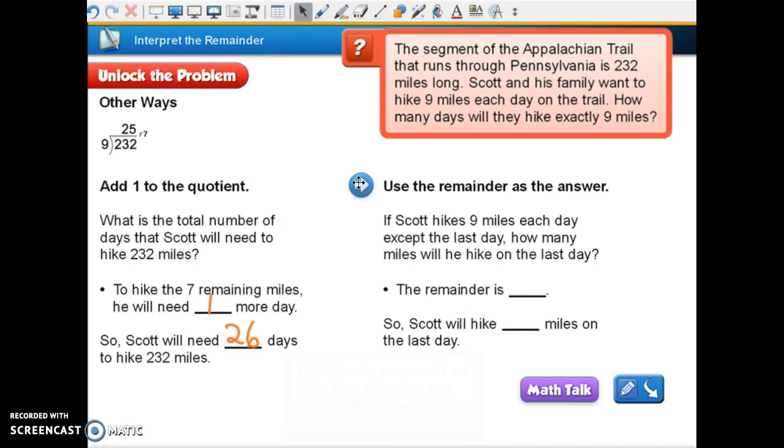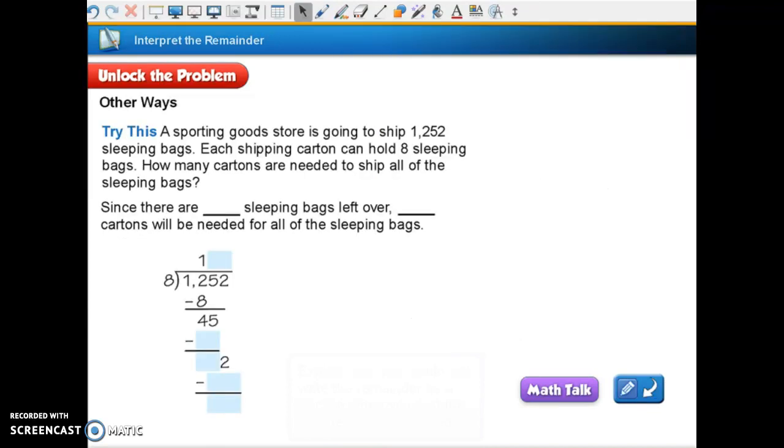Use the remainder as the answer. This is, again, still in that box. This is B. Use the remainder as an answer. If Scott hikes 9 miles each day, except that last day, how many miles will he hike on the last day? This is where we will use our remainder. Remember, we had 25 days at 9 miles a day, and he had 7 miles left. So Scott will hike 7 miles on the last day. Okay, so this is the unlock the problem.